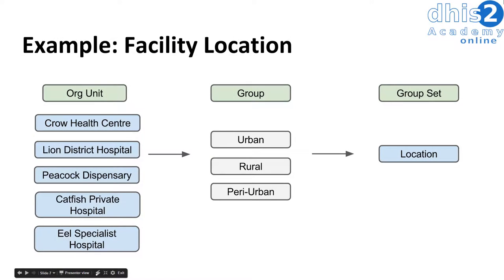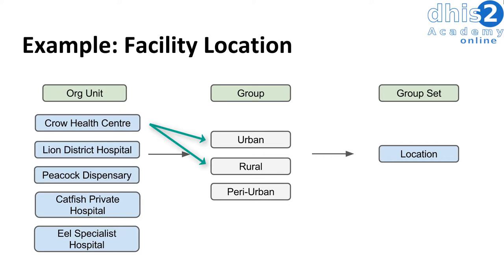Just remember the key rule we discussed: organization units cannot be members of multiple groups within a group set. For example, if Crow Health Center was part of both the urban and the rural group, and I display values by urban and rural and compare them together, the value for Crow Health Center would be counted twice. We want to make sure to avoid this when creating these groups within DHIS2.